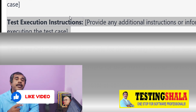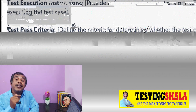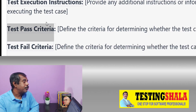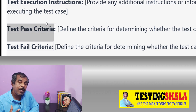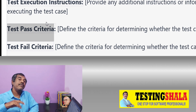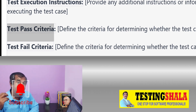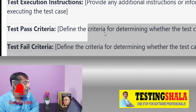The next section is Test Execution Instructions. If any specific instructions are required, you should write them in this section. After that, we should also define the Test Pass and Test Fail criteria. To make a test case pass, certain criteria need to be followed; similarly, for a test case to fail, certain criteria need to be followed, and we have to clearly define both.